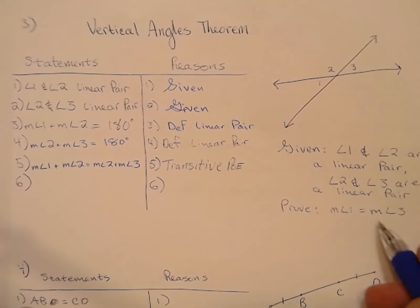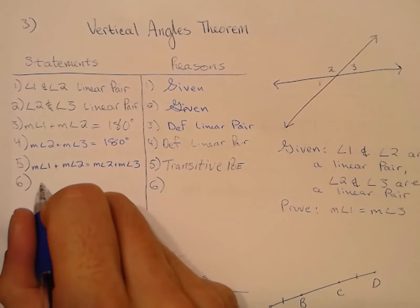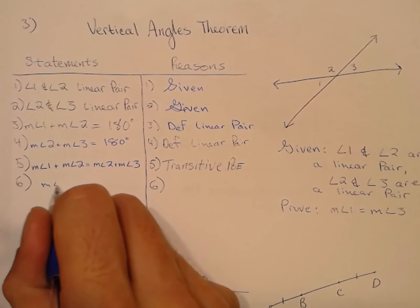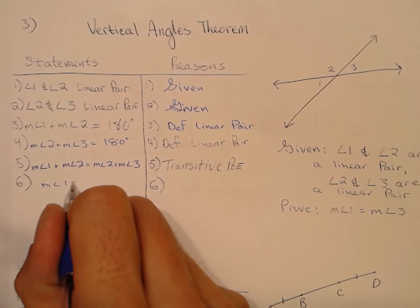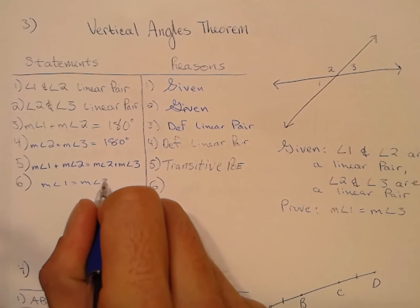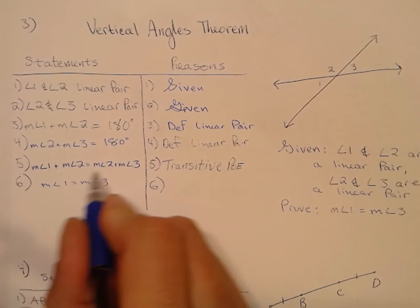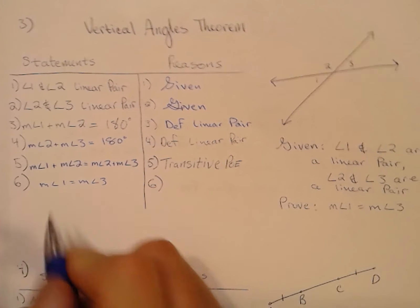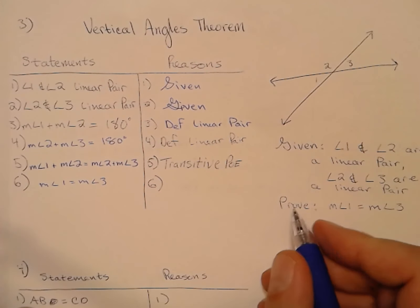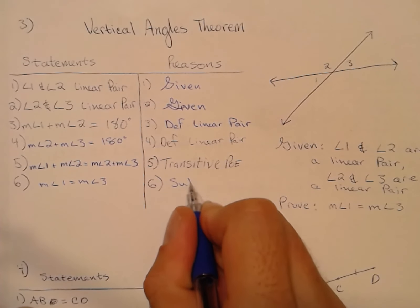We want to reach measure of angle one equals measure of angle three, and we can get there directly from the previous step by subtracting the measure of angle two from both sides — Subtraction Property of Equality.